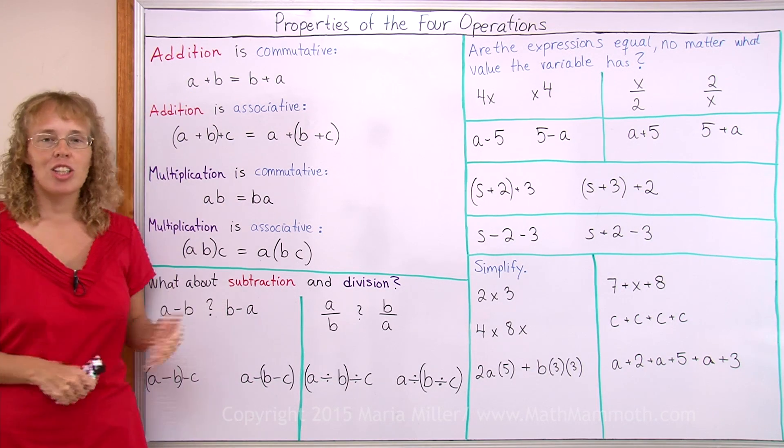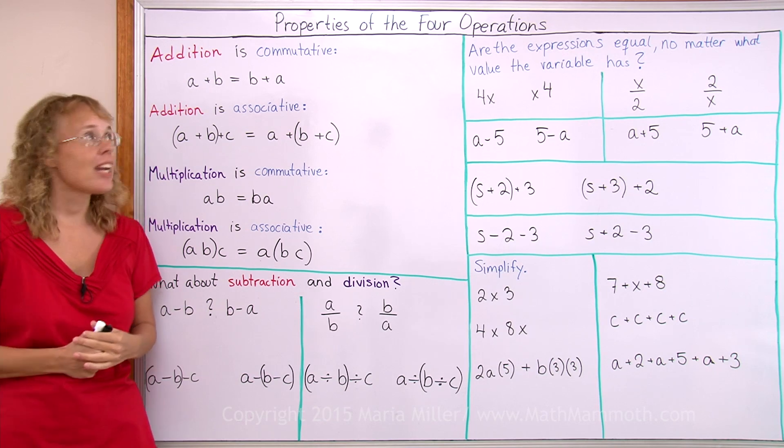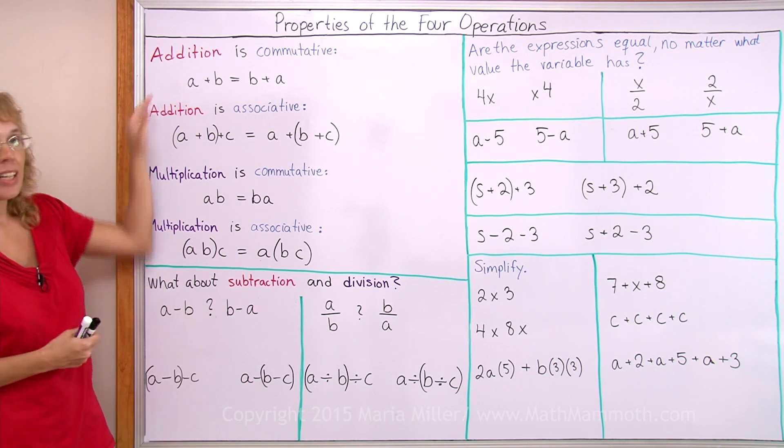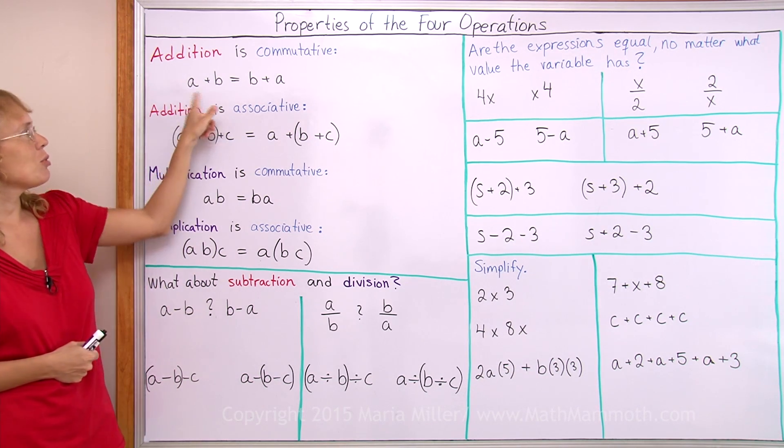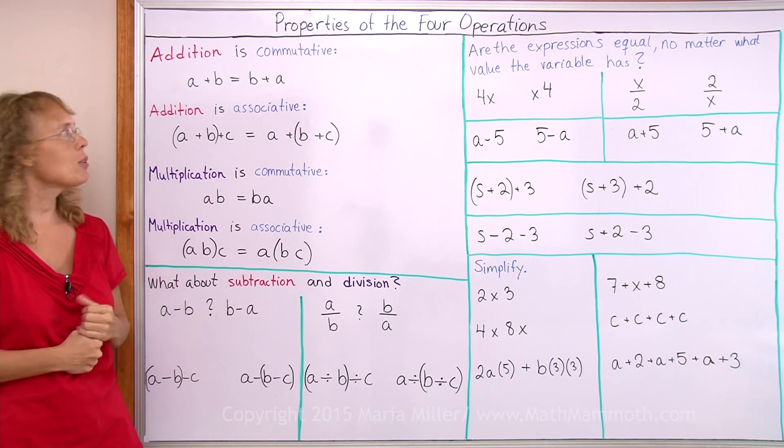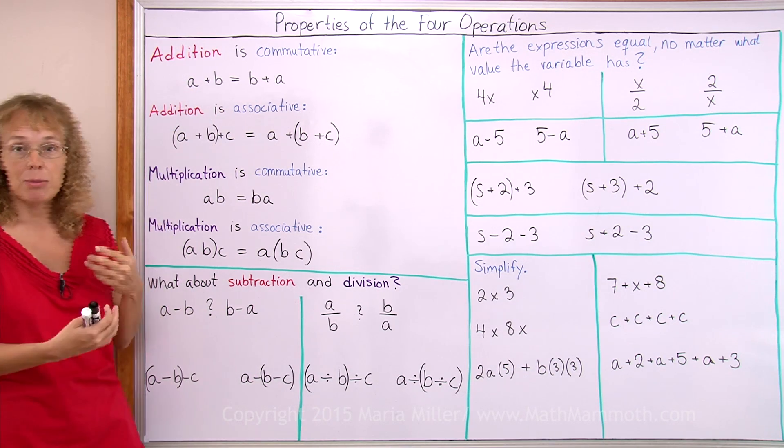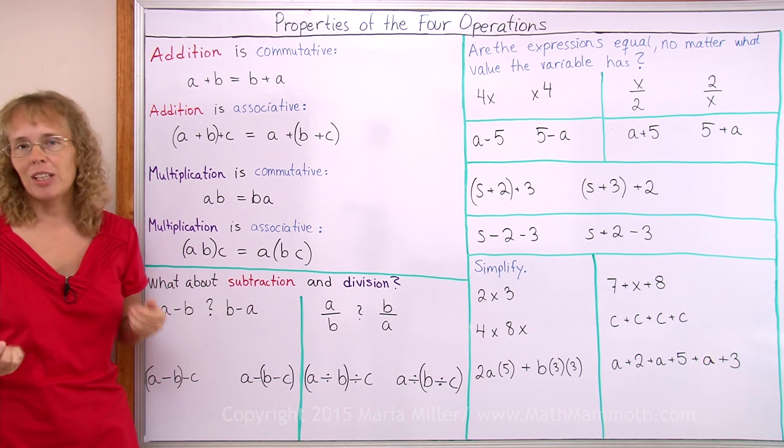And those two are the commutative property and the associative property. Now, you have actually learned these starting in first grade. For example, that addition is commutative, that you can add two numbers in whichever order you want to. 4 plus 5 is the same as 5 plus 4. You've known that for years, right?